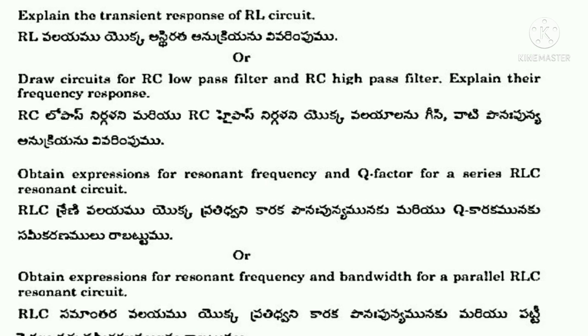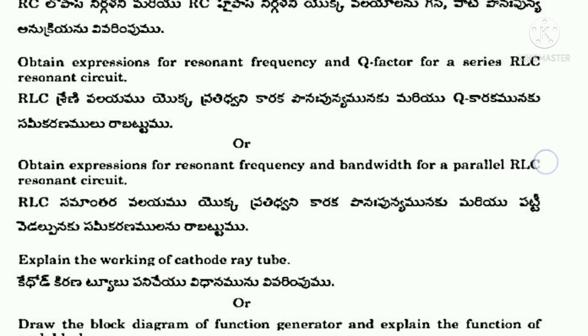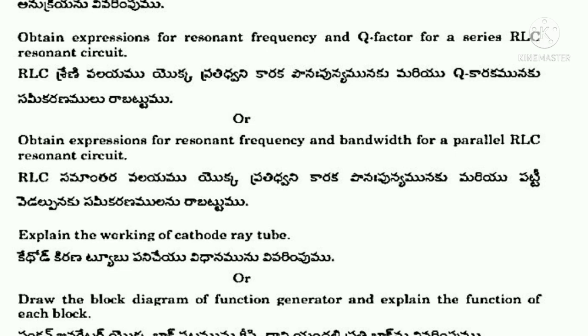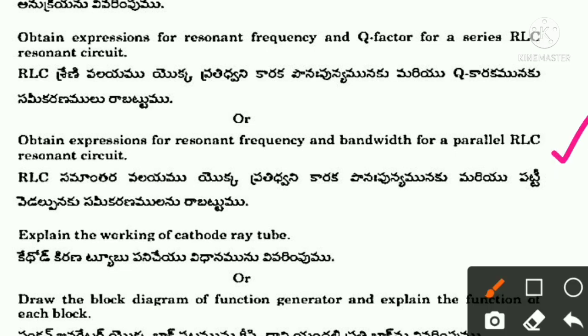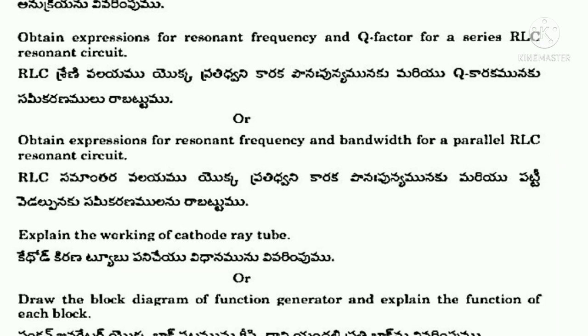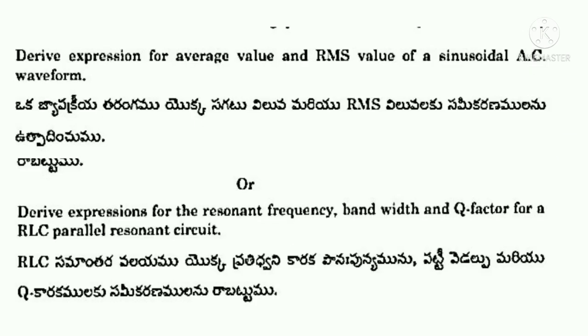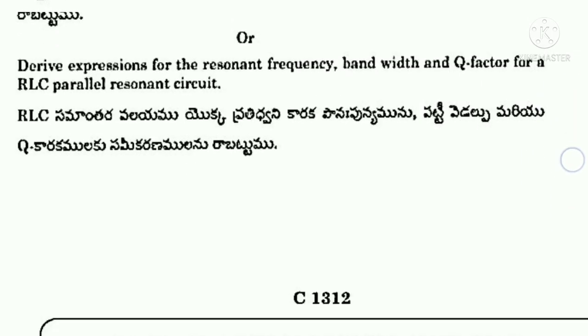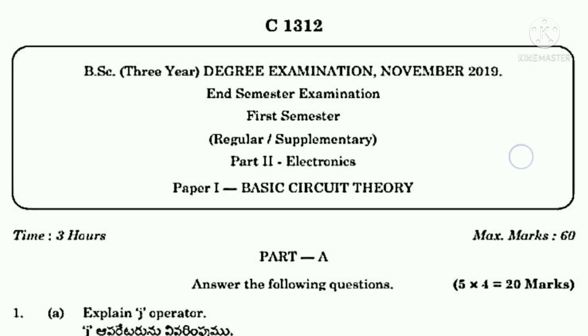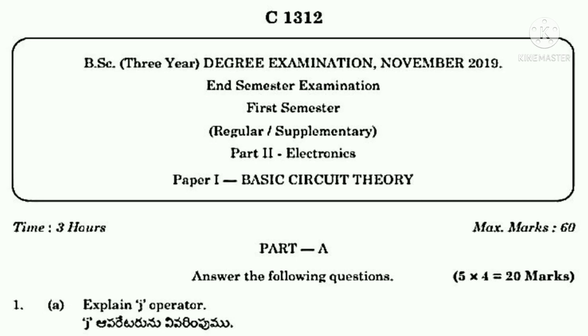More essay questions: draw circuits for RC low-pass filter and RC high-pass filter, explain frequency response, obtain expressions for resonant frequency and Q factor for series RLC resonant circuit, or obtain expressions for resonant frequency and bandwidth for a parallel RLC resonant circuit (repeated twice). Explain the working of cathode ray tube, draw block diagram of function generator and explain functions of each block, derive expressions for average value and RMS value of sinusoidal AC waveform (repeated twice), derive expressions for resonant frequency, bandwidth and Q factor for RLC parallel resonant circuit (repeated). More than five to six questions are repeated — these are the most important and must be learned.